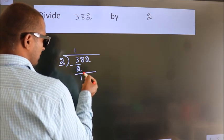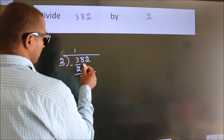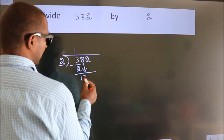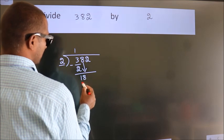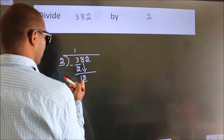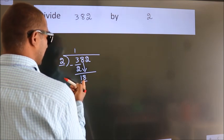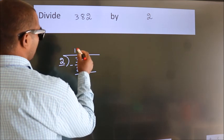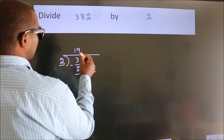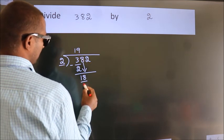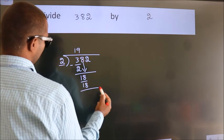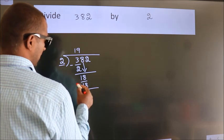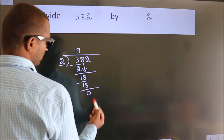After this, bring down the beside number. So, 8 down — so we get 18. When do we get 18 in the 2 table? 2 nines are 18. Now we subtract. We get 0.